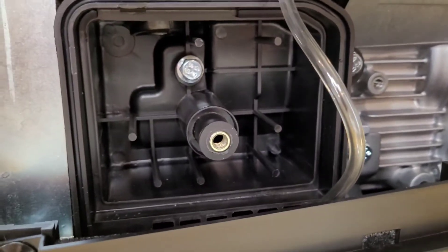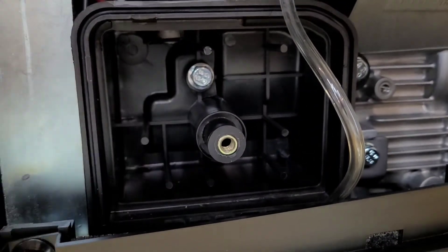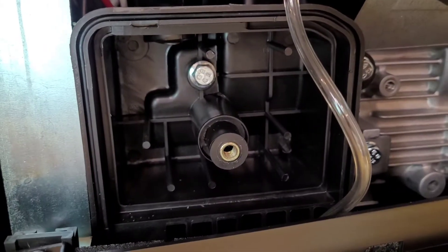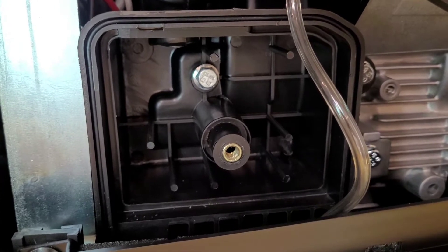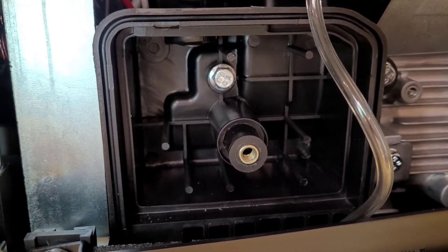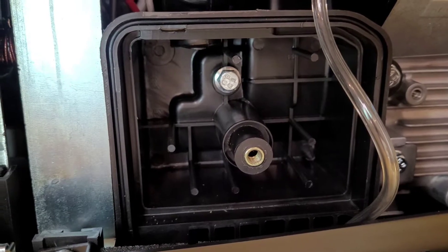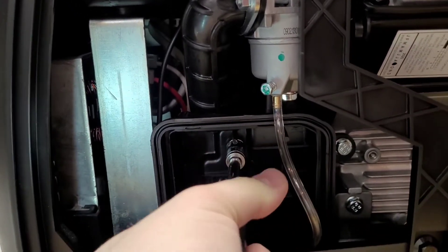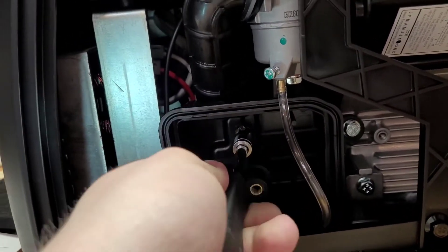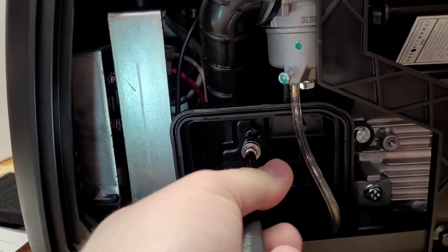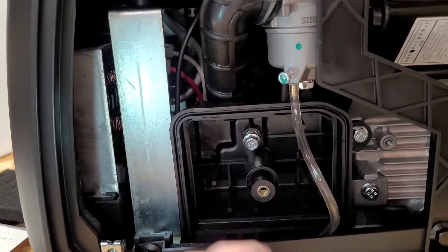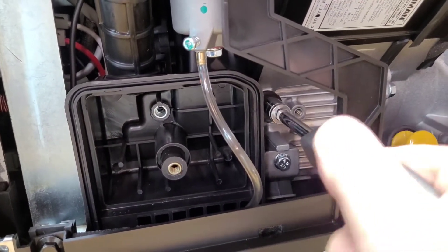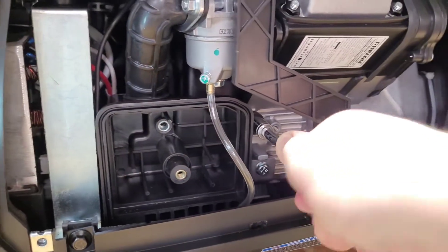And then we've got a screw right here holding the airbox housing in place. So far I've only used a Phillips screwdriver, and this bolt is a 10mm head. So I'm going to go ahead and start unscrewing it. And there's another 10mm head right here that needs to be removed.